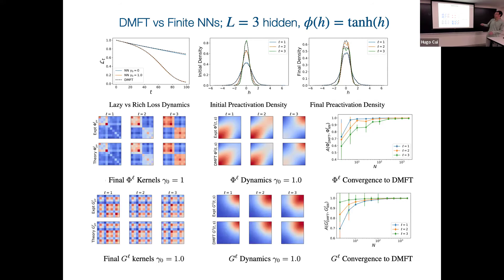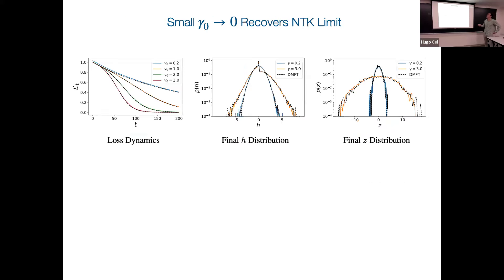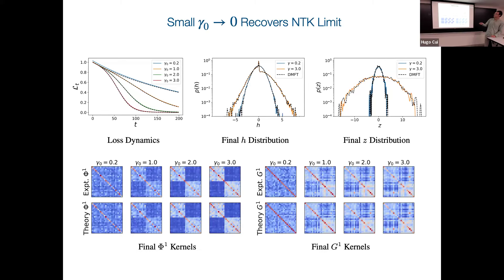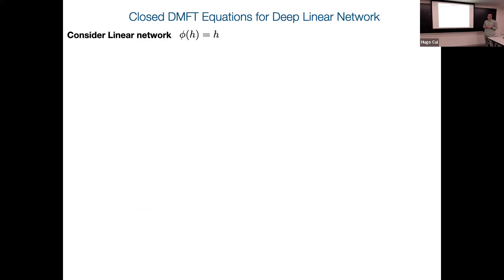You can also look at gradient kernels — the backward pass variables. With a large gamma-zero (rich regime), you get interesting non-Gaussian single-site distributions and some training acceleration. As you go to the lazy limit, you recover Gaussian-looking things even after training. By tuning gamma-zero, you can interpolate between lazy and rich regimes. In the rich regime, the kernel shows clustering: after training on two classes, all points within the same class have high similarity and cross-class similarity is low — an interesting class-based clustering.